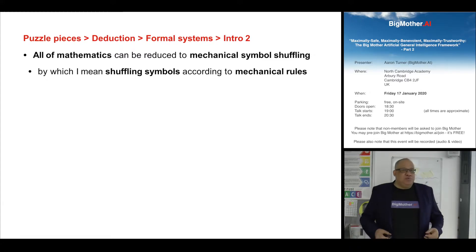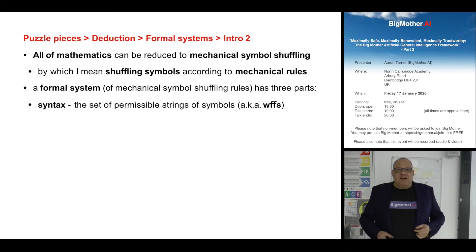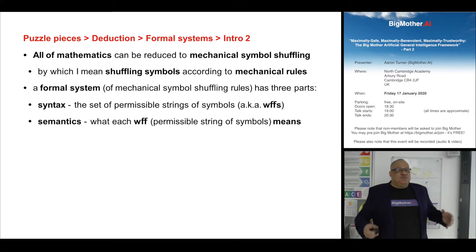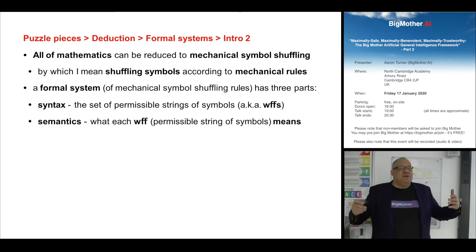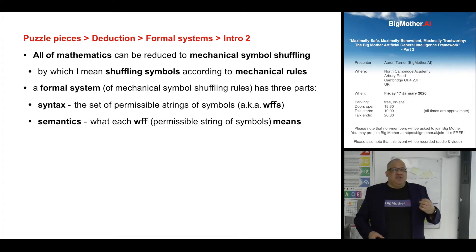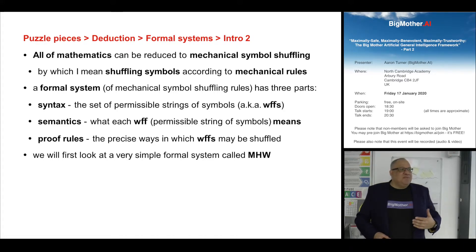A formal system of symbol shuffling rules has three parts. There's syntax, which is a set of strings of symbols also called woofs or well-formed formulae. There's also semantics, where you give each woof some mathematical meaning. And then there are the proof rules, which are the ways in which these woofs can be shuffled. We're going to look at a very simple formal system called MHW — man, horse, wheel — which is purely educational.